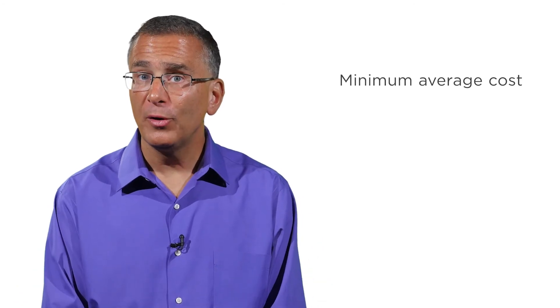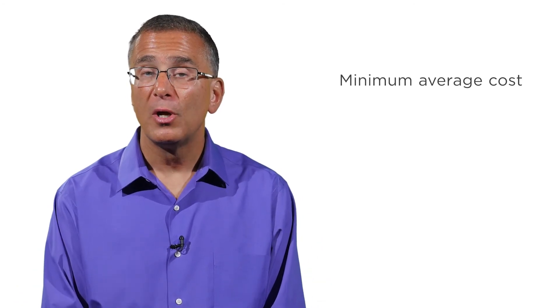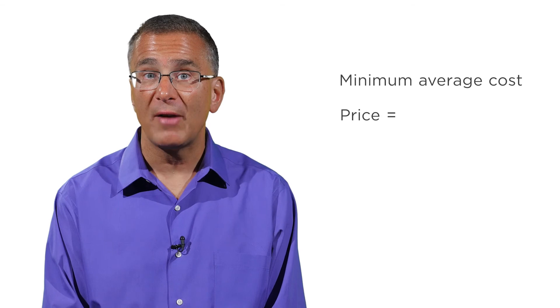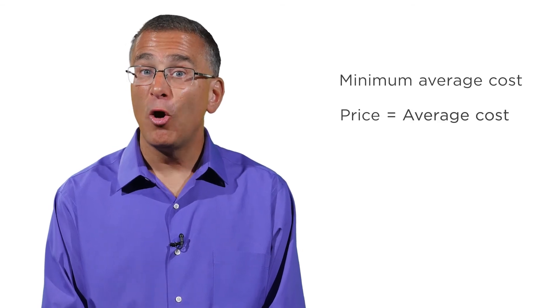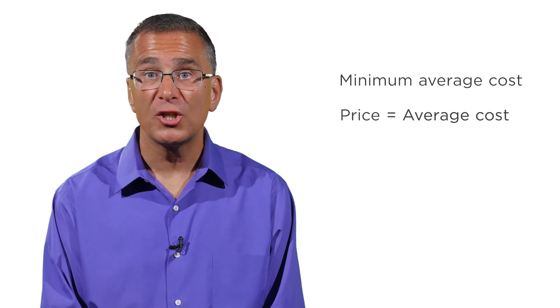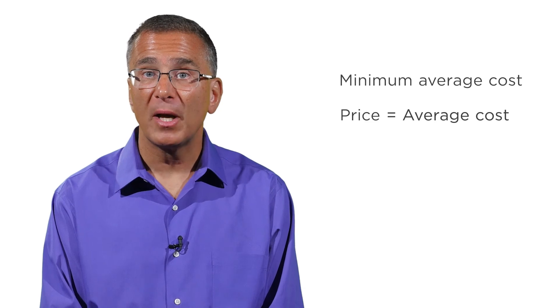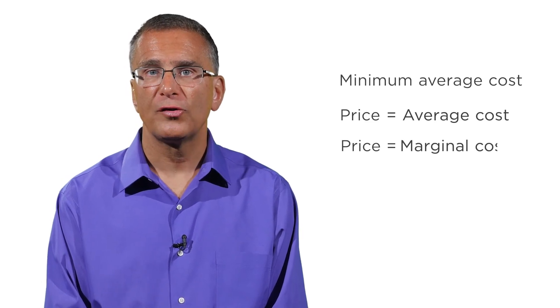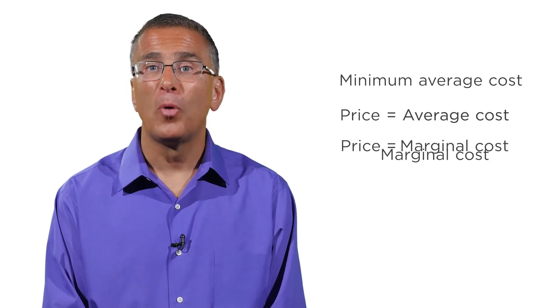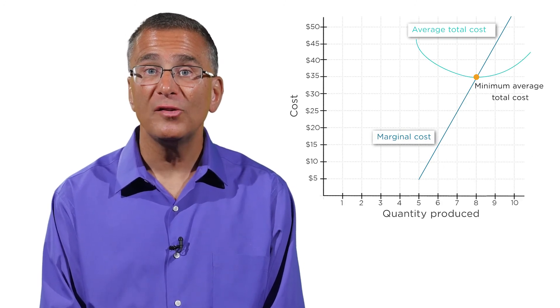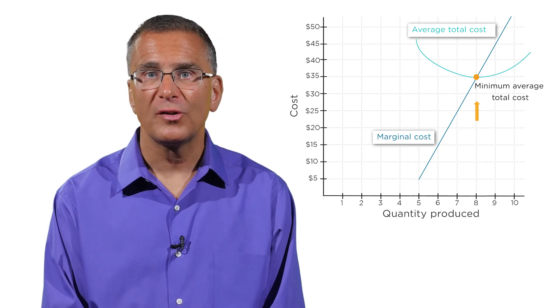Well, we know from earlier in this video that when profits are zero, revenue equals cost and price equals average cost. And we know from our work with constrained maximization that when profits are being maximized, price equals marginal cost. So that means that marginal cost equals average cost. And when does marginal cost equal average cost? At the minimum average cost.